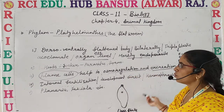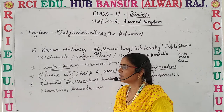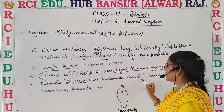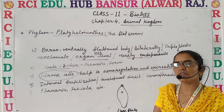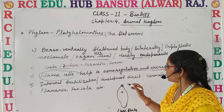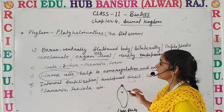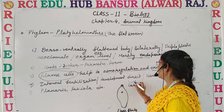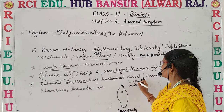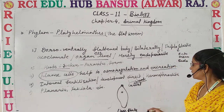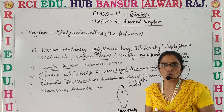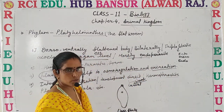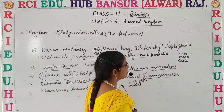Fertilization is of the internal type. Development can be indirect, meaning they have larval stages in between development, but in some cases development is direct — the organism develops into an individual without going through larval stages. They are hermaphrodite, meaning sexes are not differentiated or separated; both male and female gametes are present in one individual.